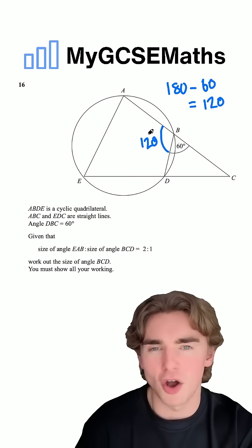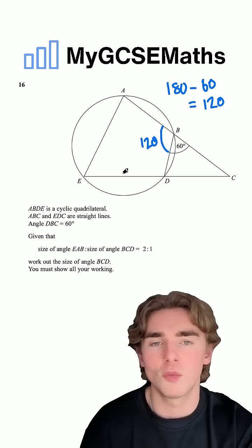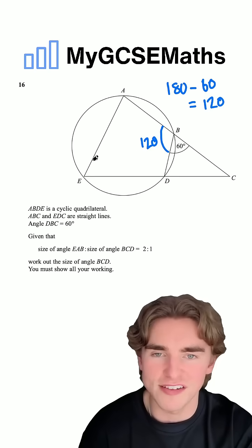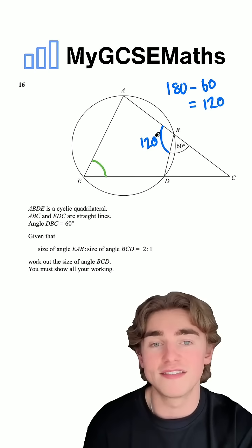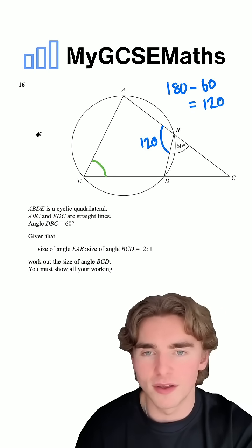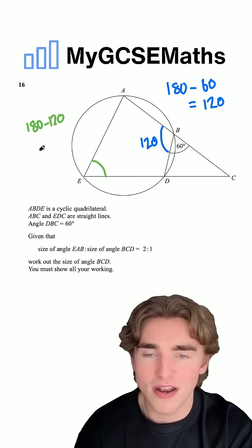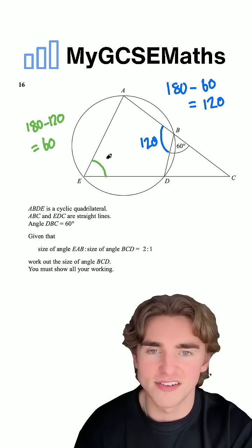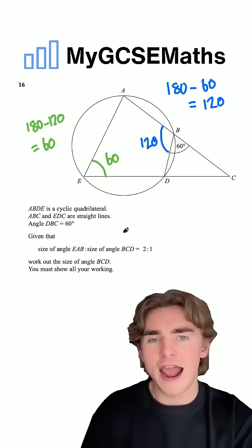Now, opposite angles in a cyclic quadrilateral add to 180. So the opposite angle over here is going to be 180 minus 120, which gives us 60. So this angle is going to be 60.